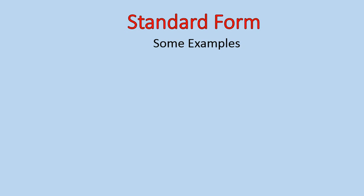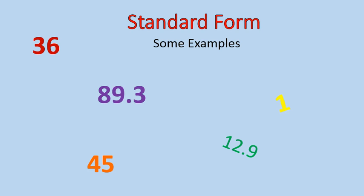Let's look at some examples of numbers in standard form: 1, 12.9, 36, 45, 89.3, 500 — those are examples of numbers in standard form. There's another one: 74. All of these numbers are just written out in standard form. It's also sometimes called standard decimal form. It's just a standard written-out way that we have numbers.